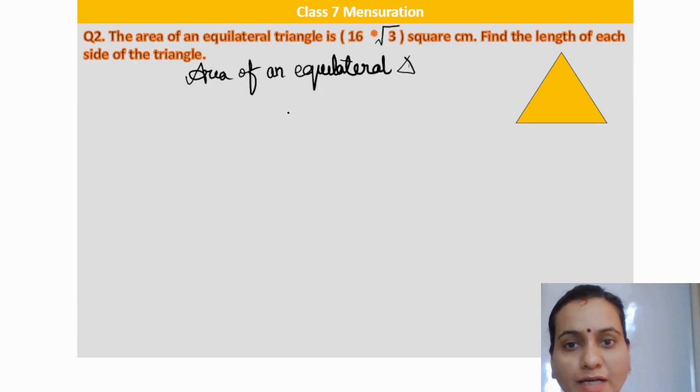Area of an equilateral triangle is root 3 by 4 a square. This formula is discussed in that video. You can check the entire playlist. The link is in the description.